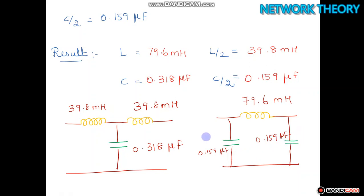So this is a complete design of a constant K low pass filter both T and phi section if design impedance is given and cutoff frequency is given. Thank you.